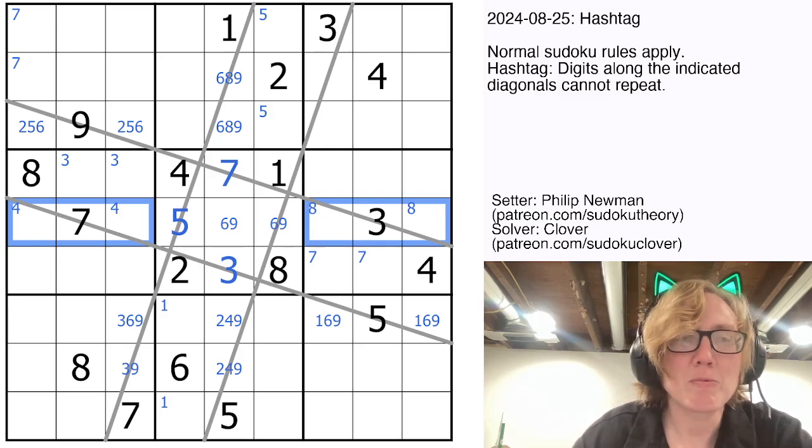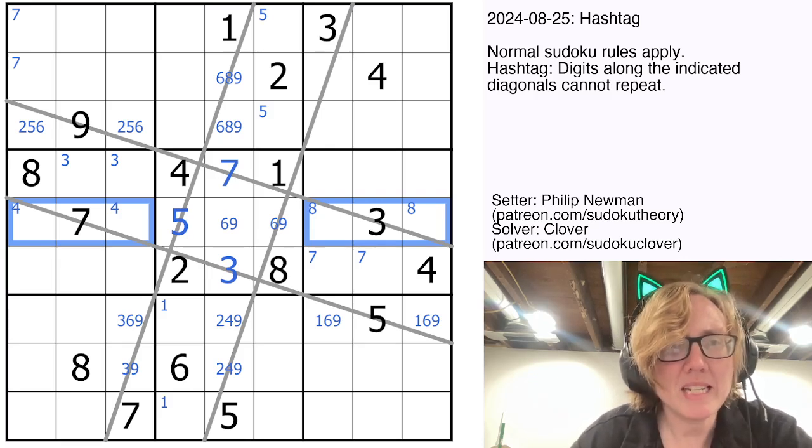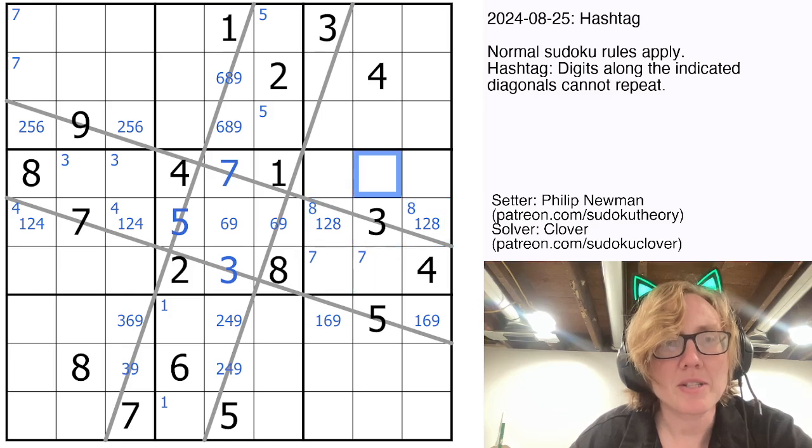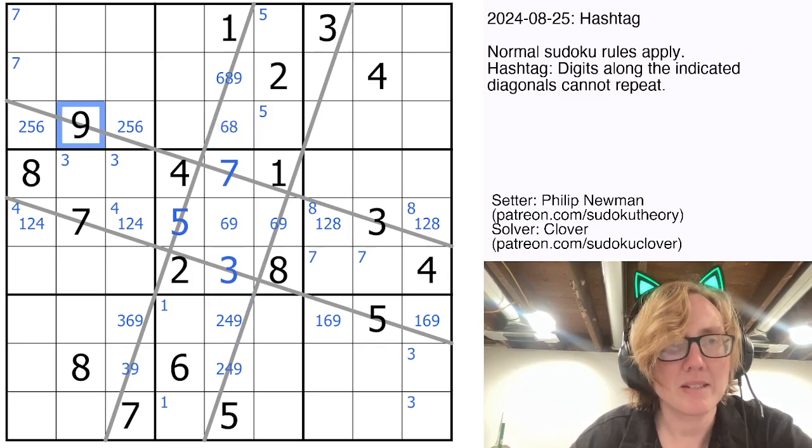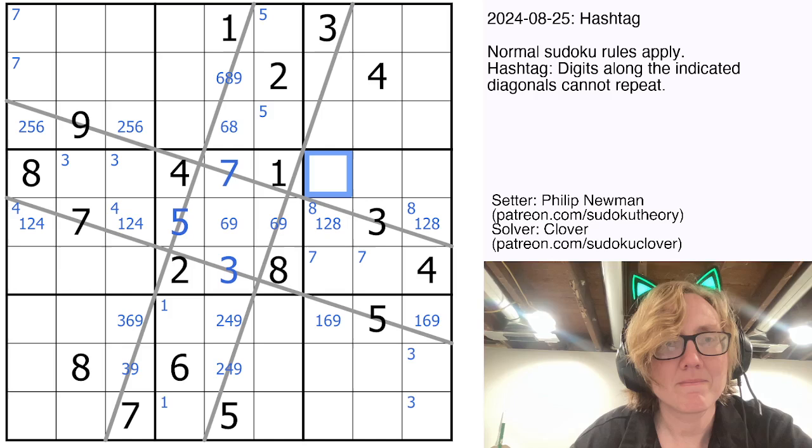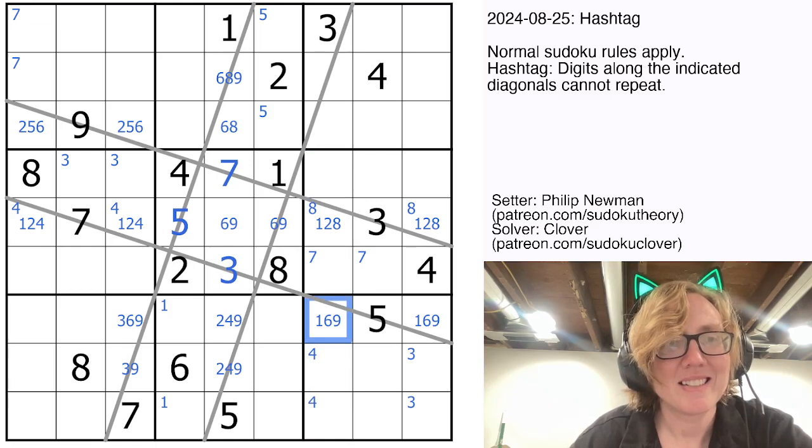So what do I need in this row then? I need a 1, a 2, a 4, and an 8. Those can't be 8s. Those can't be 4s. Interesting. One of those is going to be a 3. One of those will be a 7. We've got that already. 9 can't go here because of the 9 right there. All right. 4s will go in those cells. Come on, Clover. Get it together.